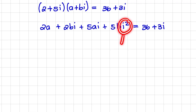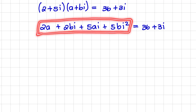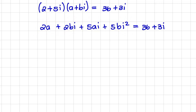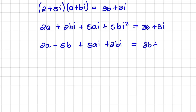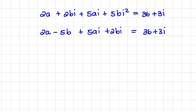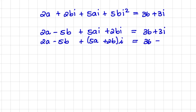Remember that i² is equal to negative 1. Also notice that there are no like terms we can add together on the left hand side. So I would group together the real parts and the imaginary parts of the expression. We'll have 2a minus 5b — since i² times 5b equals negative 5b — plus 5ai + 2bi, equal to 36 + 3i. I can rewrite that slightly as (2a − 5b) + (5a + 2b)i = 36 + 3i.